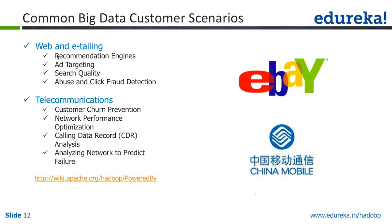Ad targeting: on a specific customer, you can target your ad based on their behavior. Improving search quality and click fraud detection — for example, if you have an ad on Google and someone keeps clicking that ad using a bot, Google has to make sure that ad is not charged for. Even if you click a single ad 100 times on Google, the advertiser will not be charged for that. That's done using big data analytics by detecting who is actually doing that.